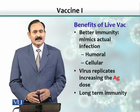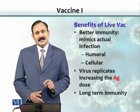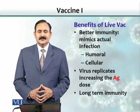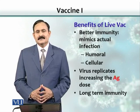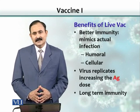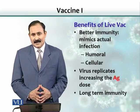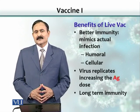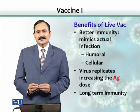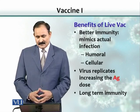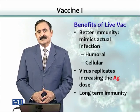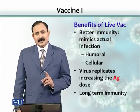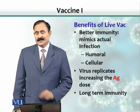Organisms that multiply inside the cell also induce cellular immunity, which is very important because to deal with viral infections we need cellular immunity in place, and live vaccines can do that. So live vaccines make long-term immunity.